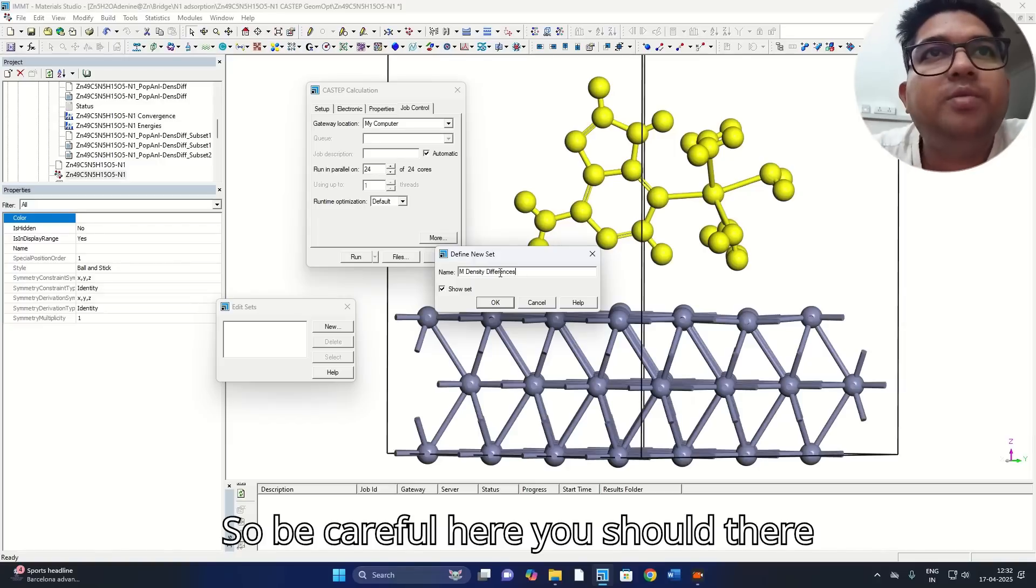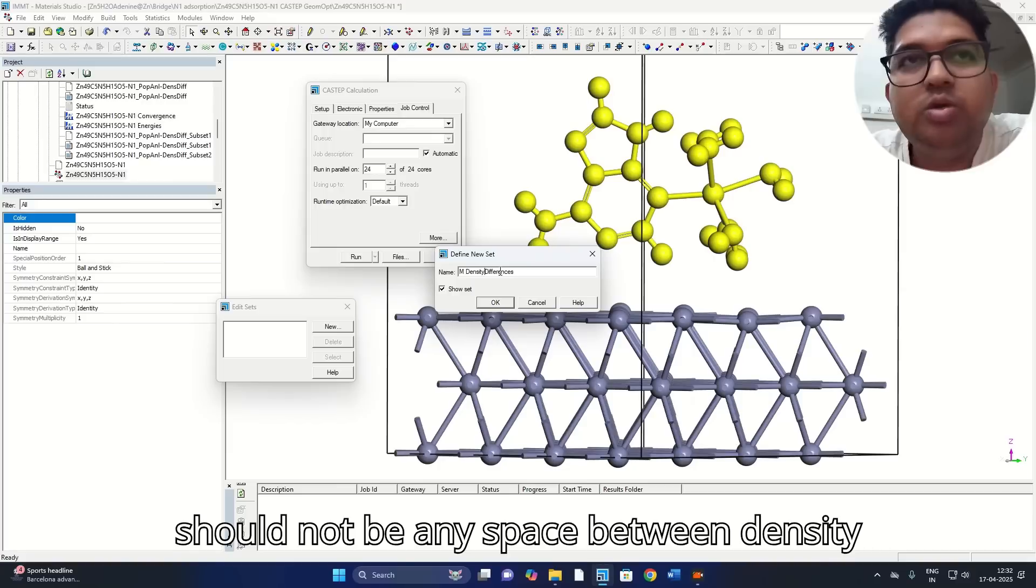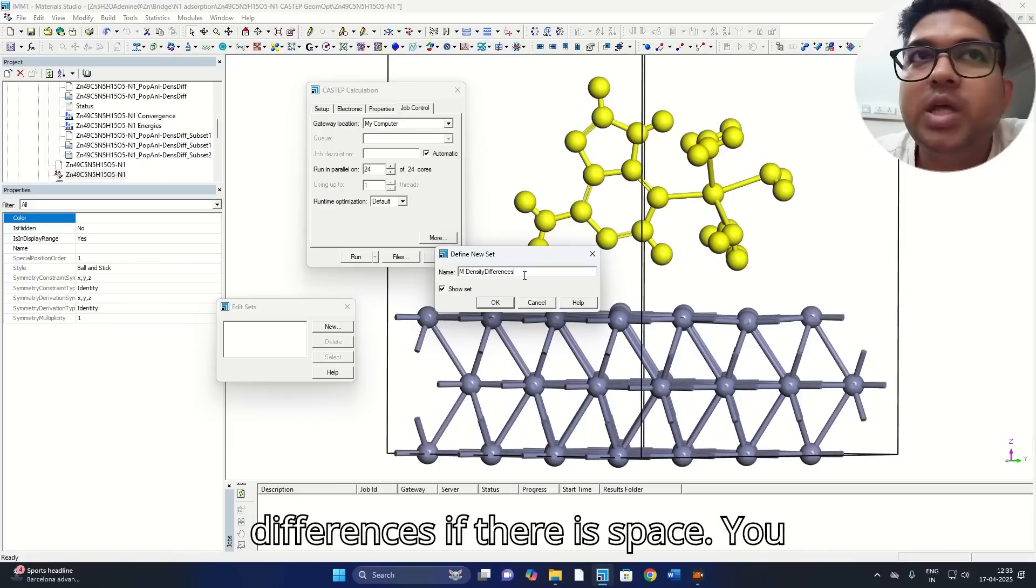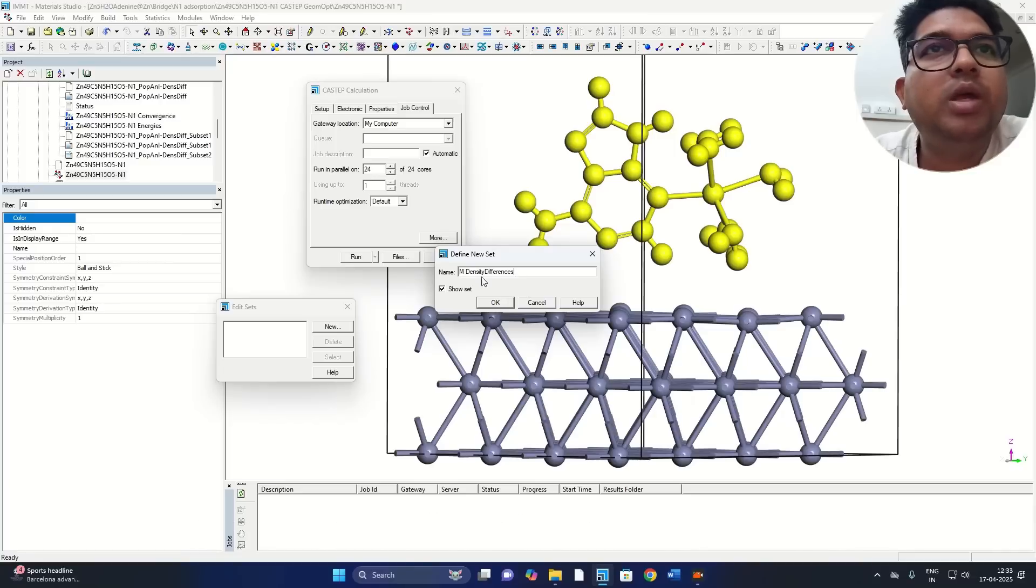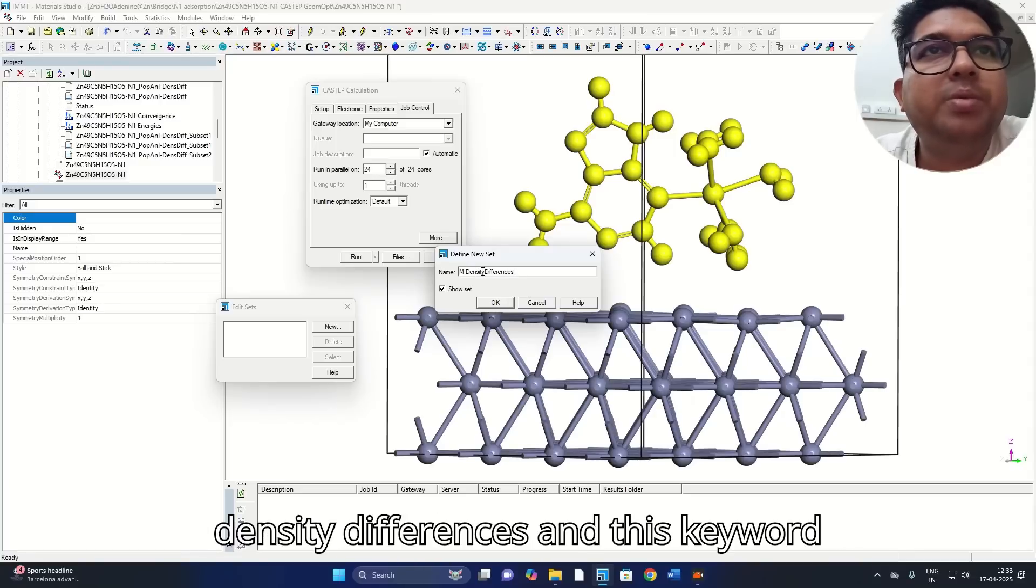So be careful here. There should not be any space between density differences. If there is space, your calculation won't be submitted. So make sure there is no space between density differences, and this keyword has to be there: densitydifferences. Press OK.